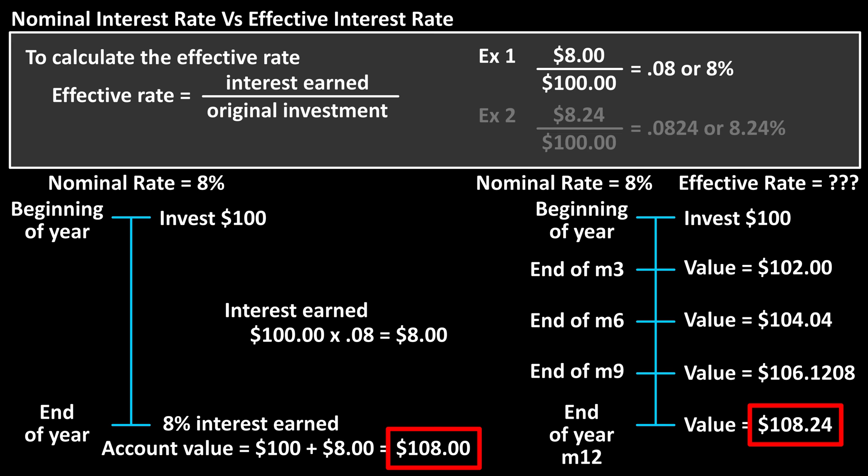For example 2, we have $8.24 divided by $100, which equals 8.24%. And this 8.24% is the effective rate of interest. For example 1, since there is only one compounding period per year, the effective rate equals the nominal rate of 8%.